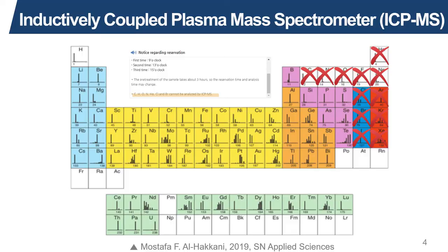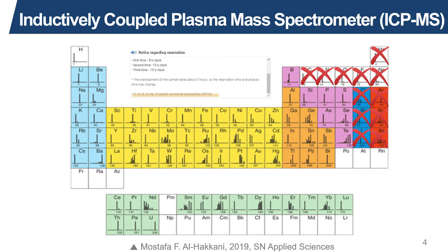Upon inquiry, the operators explained that this is mainly due to: one, the ionization energies of light elements which are considerably higher than that of the argon plasma; and two, the ionization efficiencies of certain elements due to matrix effects, a topic we will get into later. So remember, if you are interested in analyzing samples containing these elements, it is recommended that you look for other analytical techniques. You have been warned.